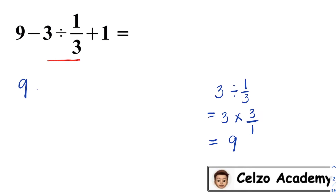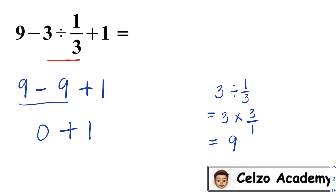So we will replace 3 divided by 1 third with 9, giving us 9 minus 9 plus 1. Since the expression only involves addition and subtraction, we simplify from left to right. Some people interpret the order of operations as addition before subtraction — that's not true. Simplifying from left to right, we do 9 minus 9 first, which is 0, and then plus 1. So the answer to this problem is 1.